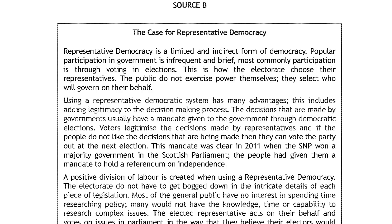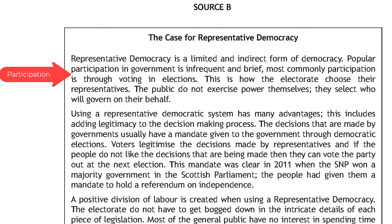Let us now turn our attention to Source B, which presents the case for representative democracy. We will follow the same steps as Source A, reading and identifying themes. Paragraph 1 states: representative democracy is a limited and indirect form of democracy. Popular participation in government is infrequent and brief — most commonly through voting in elections. The public do not exercise power themselves; they select who will govern on their behalf. I think that participation would work here as a theme to sum up this paragraph.